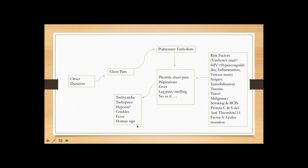Homan's sign is where you dorsiflex the patient's foot and they have pain in their posterior calf or leg — a positive Homan's sign suggests DVT. Therefore, if this patient also has shortness of breath and pleuritic chest pain, you would suspect PE.